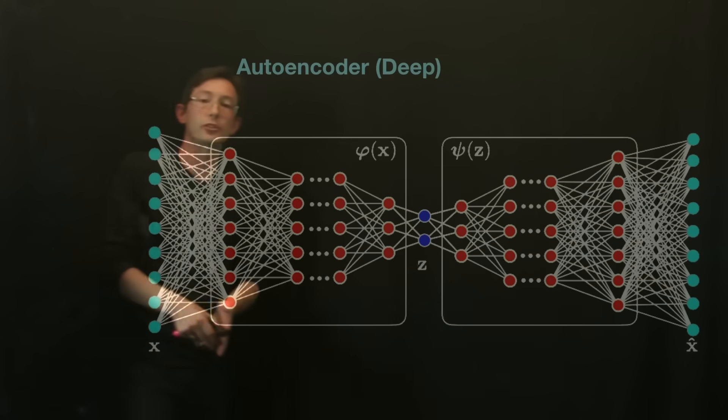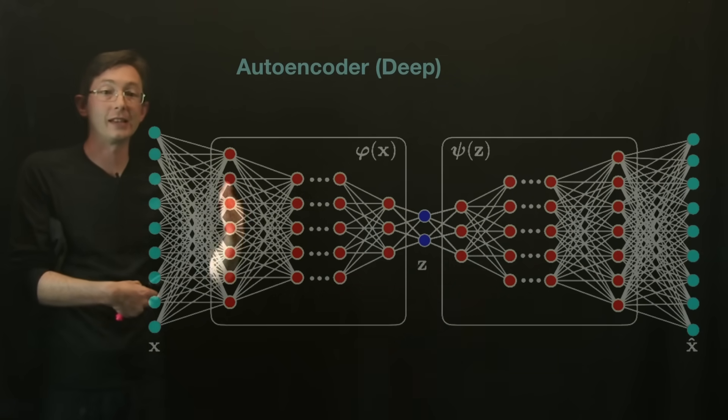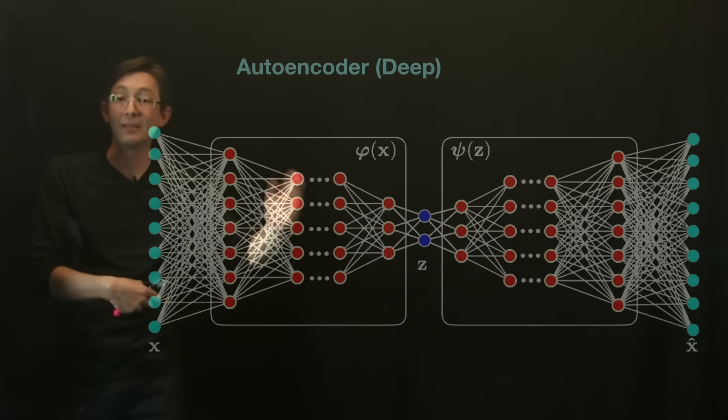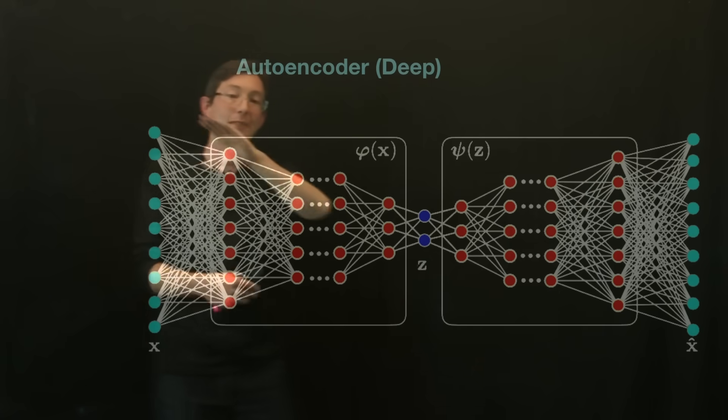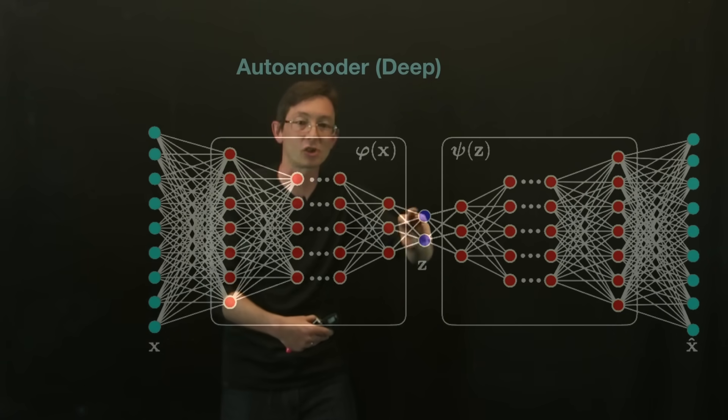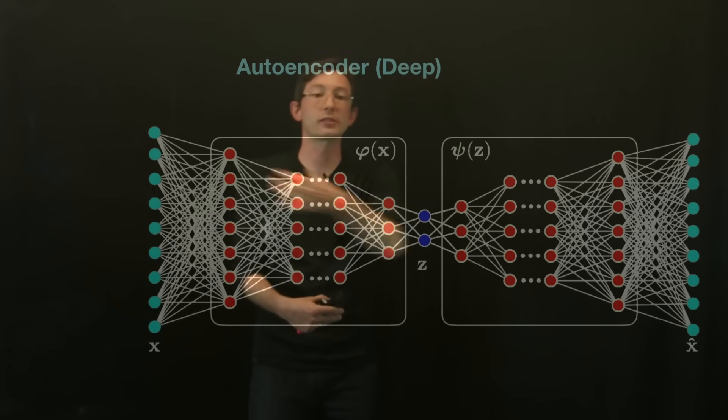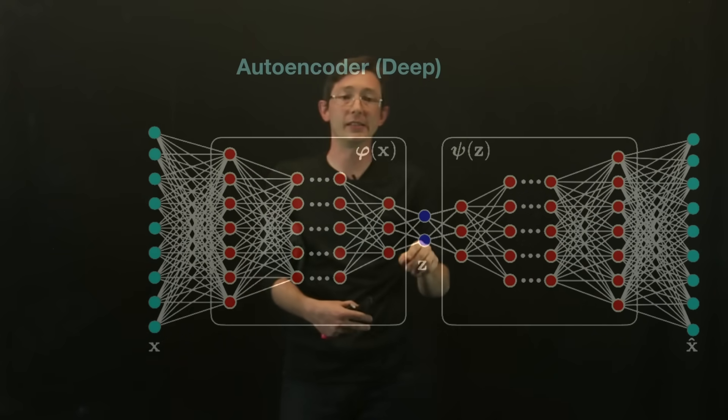Since then researchers have massively generalized this to deep autoencoders, where now the nodes can have non-linear activation functions, and I can have many, many layers, and get better compression, better extraction of the essential features of my high-dimensional data in this latent space z.